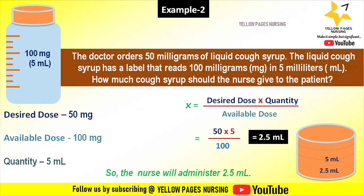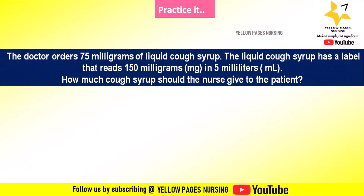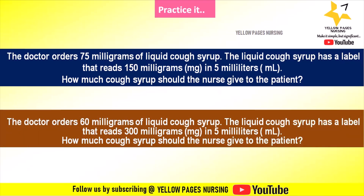Now for your practice: the doctor orders 75 milligrams of liquid cup syrup; the label reads 150 milligrams in 5 milliliters — how much should the nurse give? Next, the doctor orders 60 milligrams of liquid cup syrup; the label reads 300 milligrams in 5 milliliters — how much should the nurse give? You can do the calculations and mention the answers in the comment box.